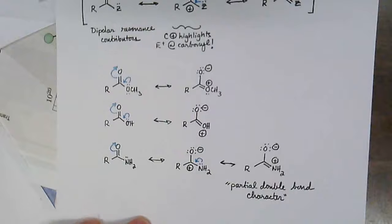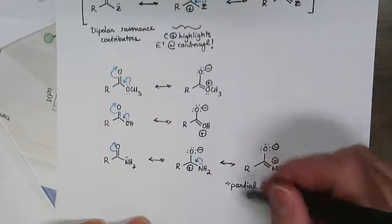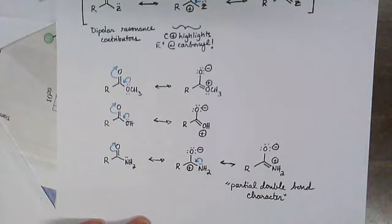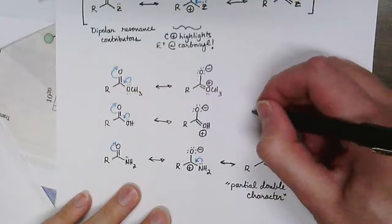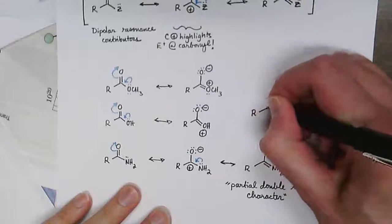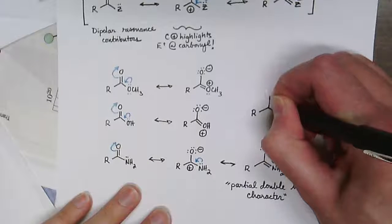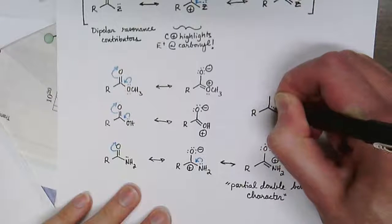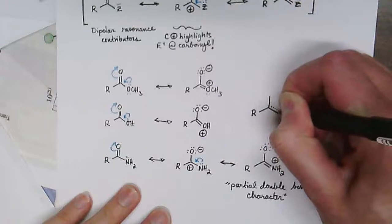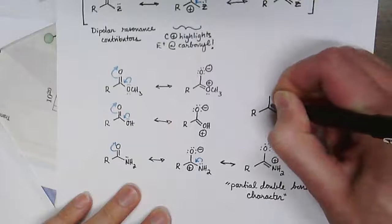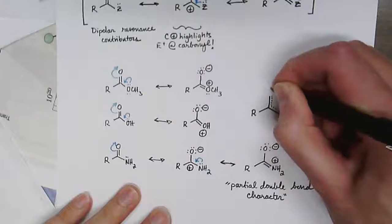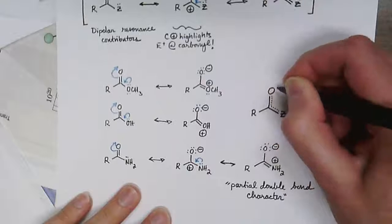than the carboxylic acids and the esters. Overall, if we wanted to depict a hybrid for this sort of scenario—a resonance hybrid—we would show that at any given point in time we can draw a carbon-Z double bond and a carbon-oxygen double bond of the carbonyl group.